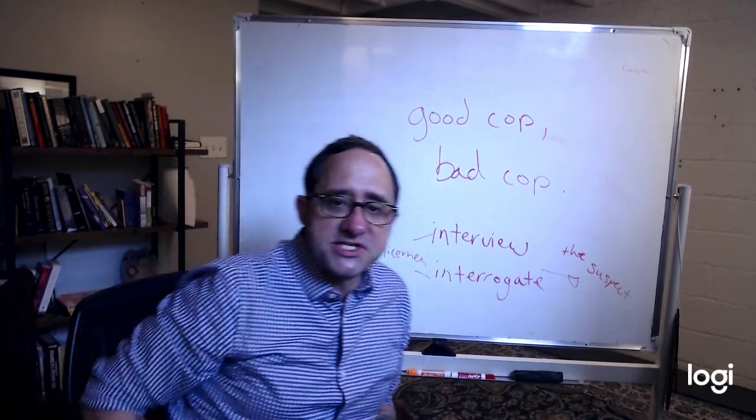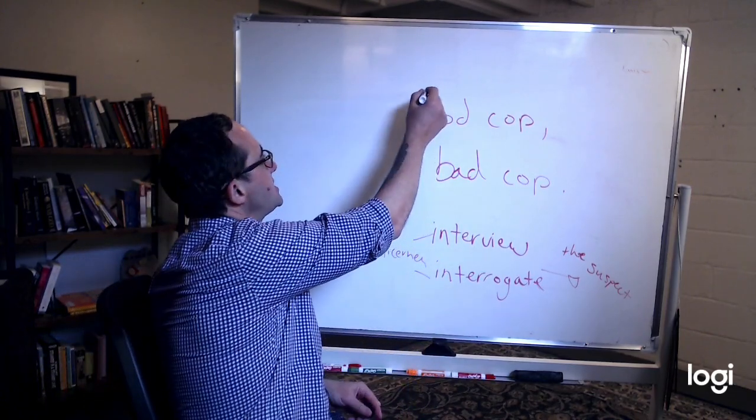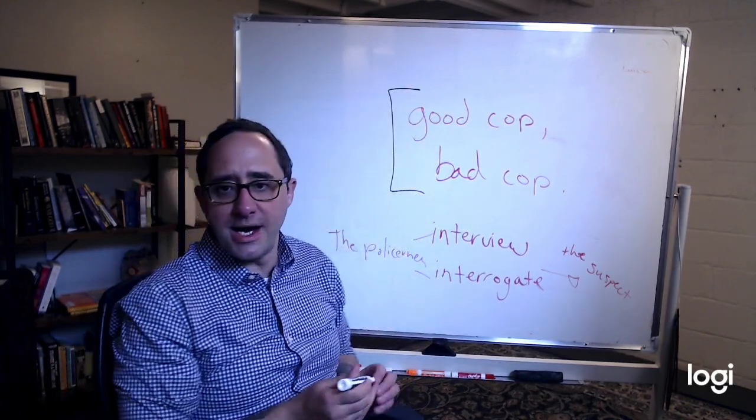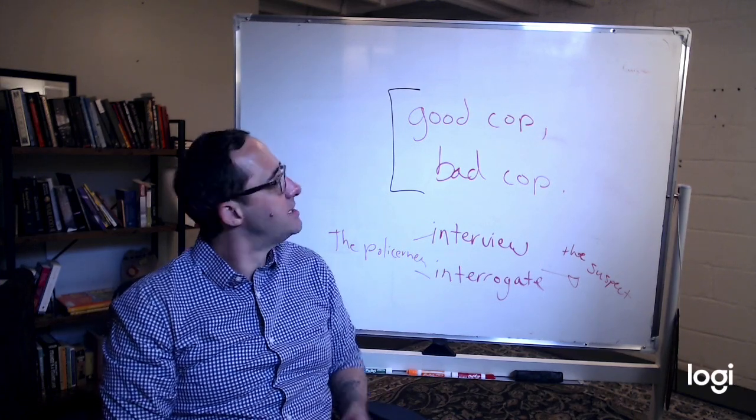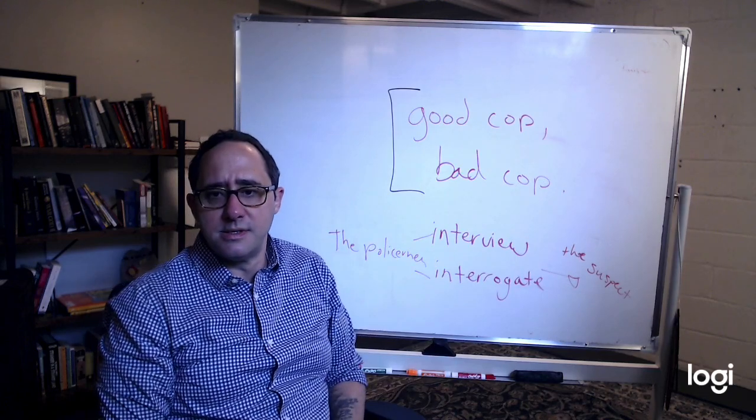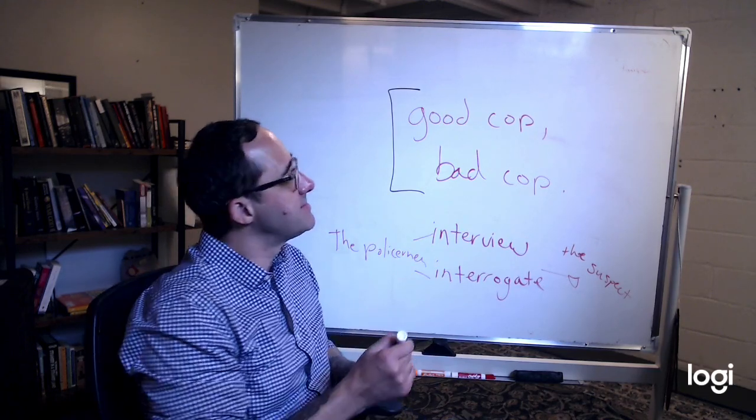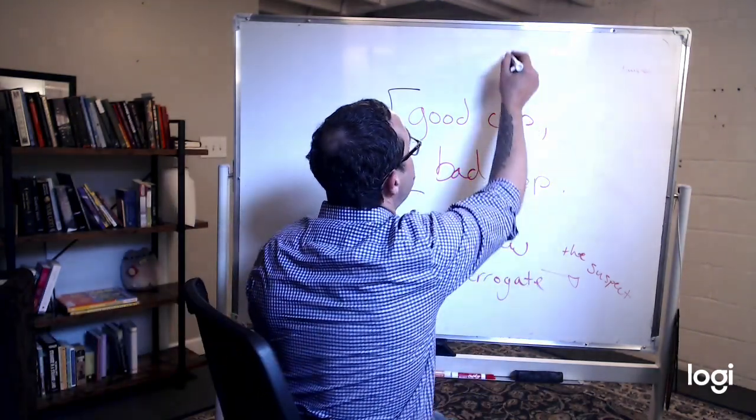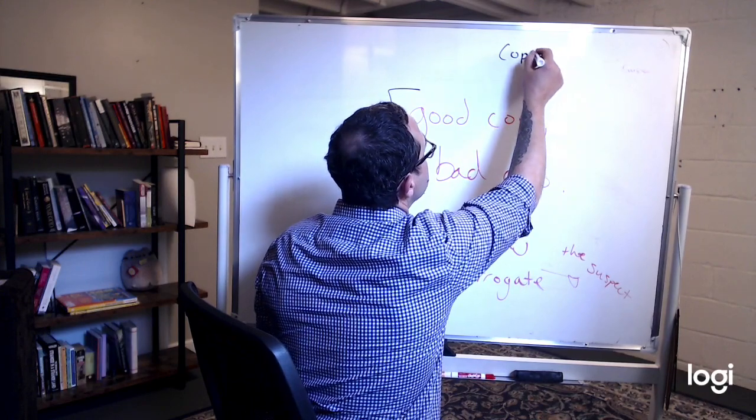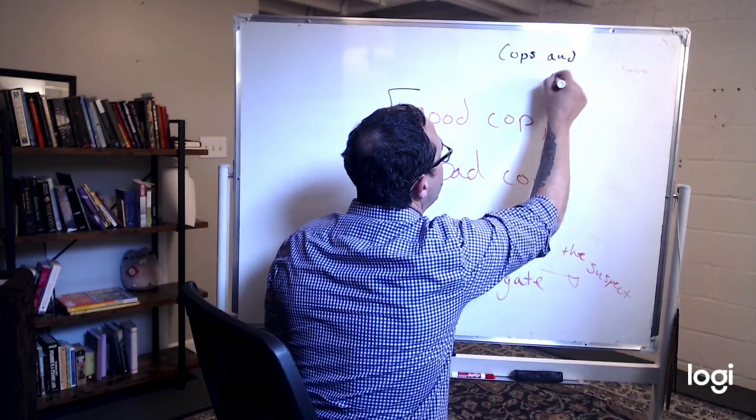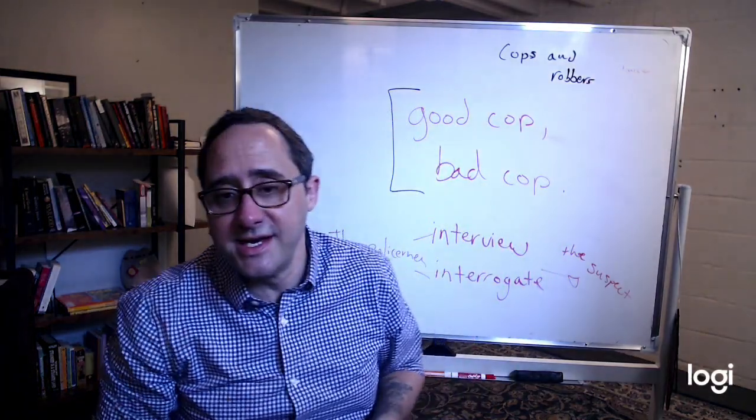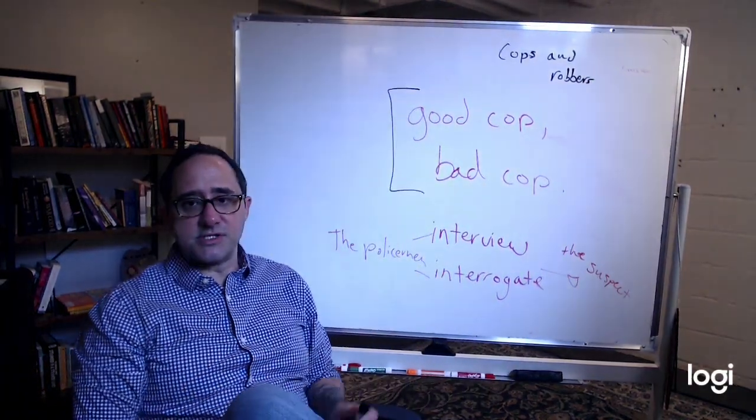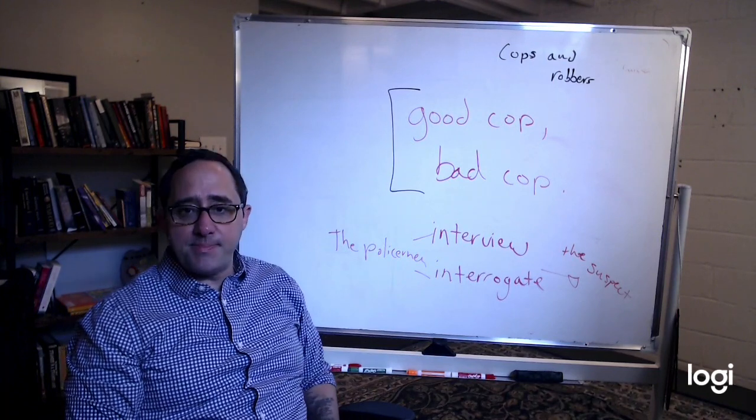So we're going to start with this term: good cop, bad cop. We say this a lot in the US. What is a cop? Maybe you already know. Sometimes when we're children, we play cops and robbers. This means policemen and criminals, cops and robbers. So a cop is a policeman.